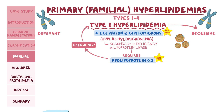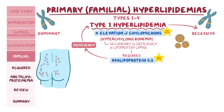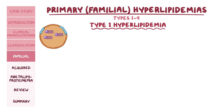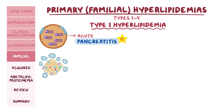This condition is characterized by the rapid development of many xanthomas on the back and buttocks that can be itchy. Due to the rapid nature of their development, they're referred to as eruptive xanthomas. In addition, the high concentration of triglycerides in chylomicrons can often lead to the development of acute pancreatitis. This occurs because when the pancreatic cells encounter triglycerides, they release the enzyme lipase, which breaks them down into free fatty acids. Too many free fatty acids can be toxic to the pancreatic cells, leading to acute pancreatitis.